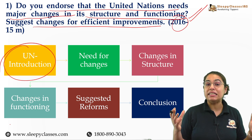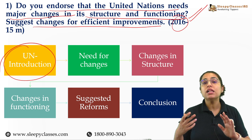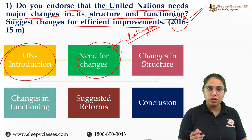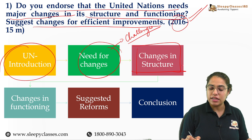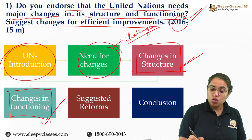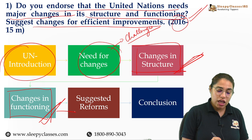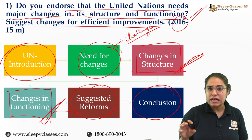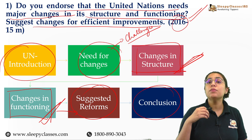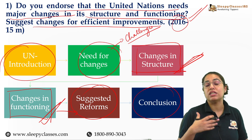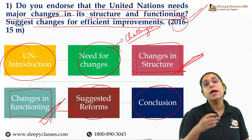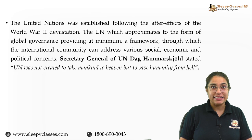You can structure your answer by first discussing UN's role as a multilateral international organization and how it makes global politics better. Then discuss challenges hampering its structure and functioning. Then talk about structural reforms required, followed by functional reforms. You can add other suggested reforms in a separate paragraph before concluding by highlighting that despite all criticisms, UN is important for cooperative global politics — tackling issues like the Ukraine crisis, COVID-19, and global commons better.